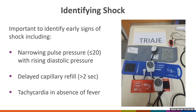Shock is the main manifestation of severe dengue, and unrecognized shock is another common cause of death. It's very important to always look for early signs of shock, not only decompensated or hypotensive shock. Look for narrow pulse pressure — when the difference between systolic and diastolic pressure is 20 or less — delayed capillary refill of more than two seconds, or tachycardia in the absence of fever.